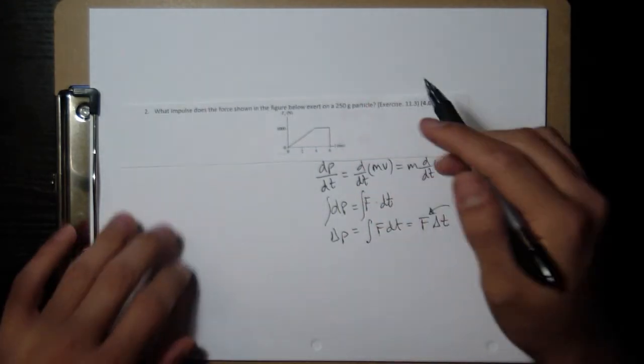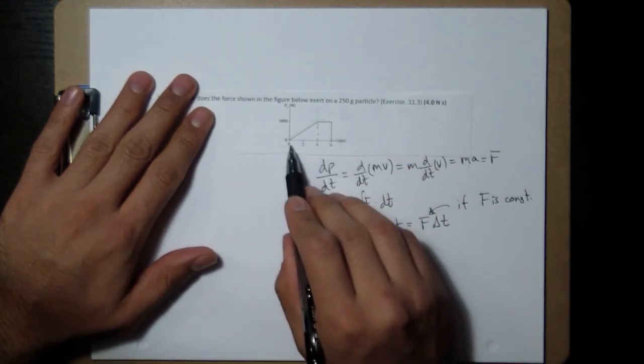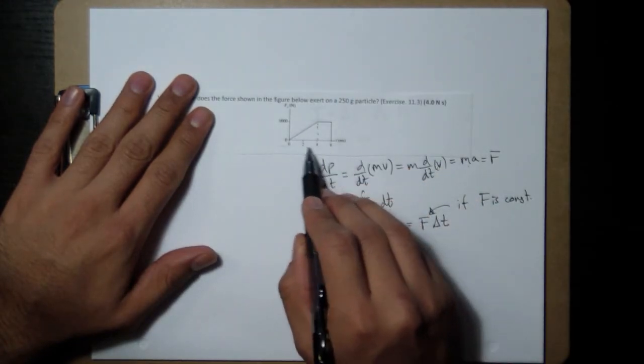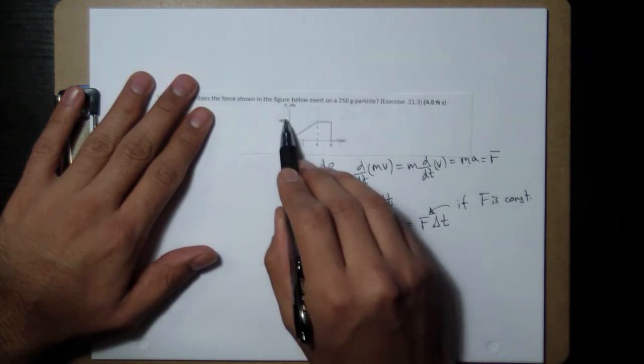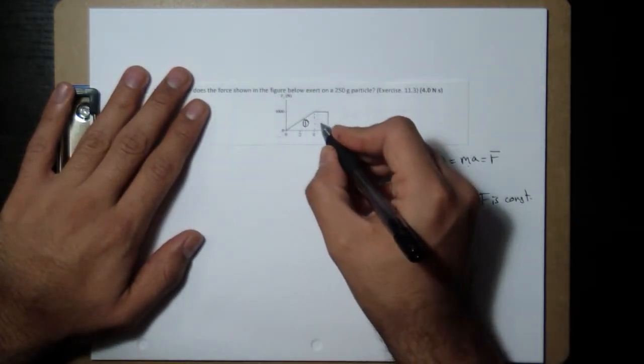And to do that, we say, okay, well, I have two parts: a triangle, which has an area of 0 to 4, remember, this is milliseconds, and then times 1000 divided by half. So I'm going to do that. I'll call this area 1 and area 2.